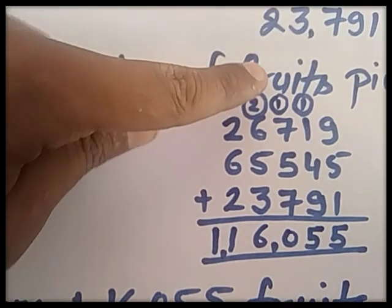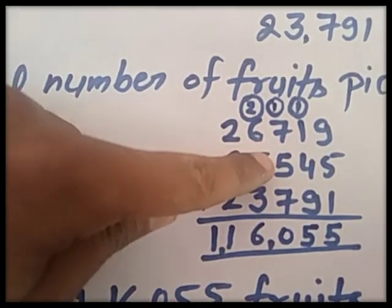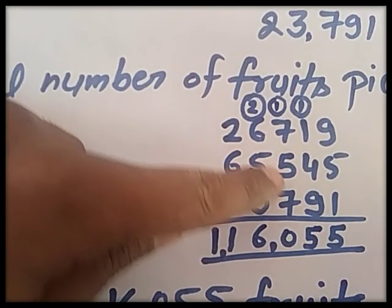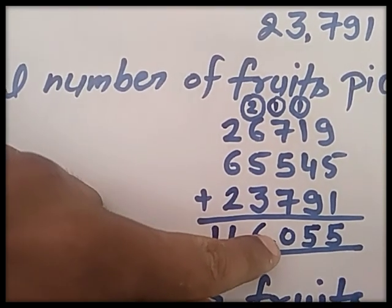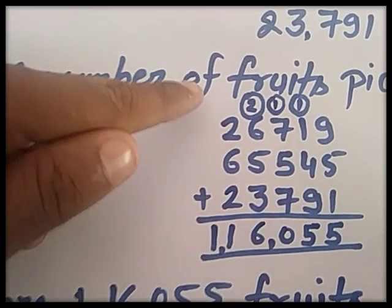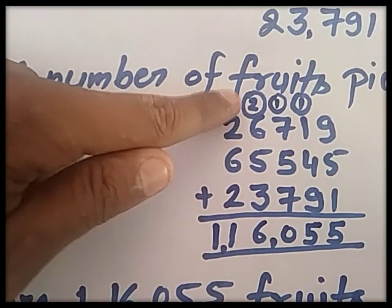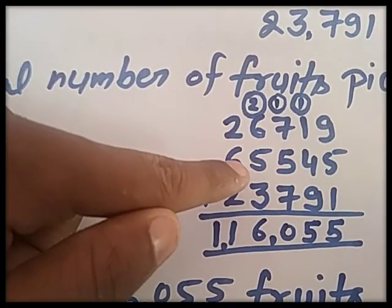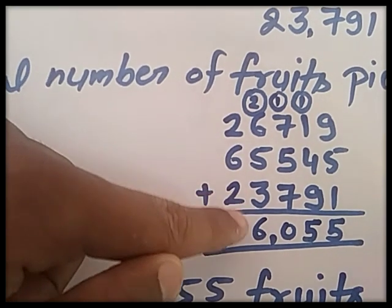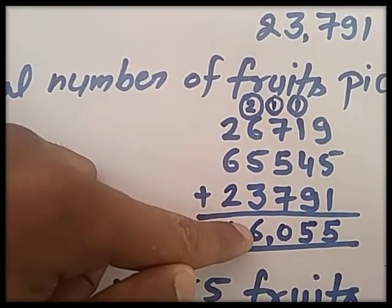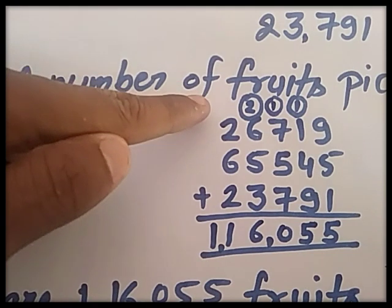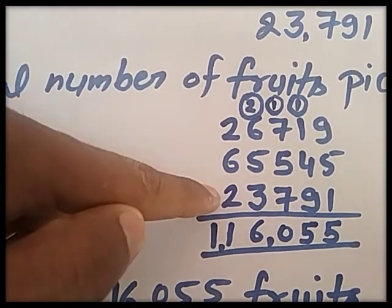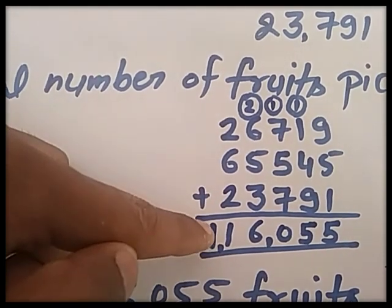Now, 7 plus 1 is 8, 8 plus 5 is 13, 13 plus 7 is 20. Write 0, carry 2 at the 1000th place. Now 6 plus 2 is 8, 8 plus 5 is 13, 13 plus 3 is 16. Write 6, carry 1. 6 plus 4 is 10, 10 plus 1 is 11.